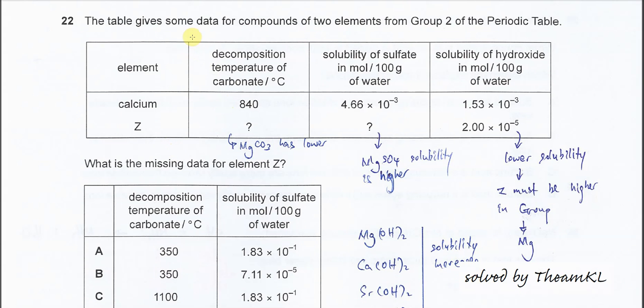The table gives some data for compounds of two elements from Group 2. We have calcium: decomposition temperature is 840, solubility is 4.66 times 10^-3, and solubility of hydroxide is 1.53 times 10^-2.